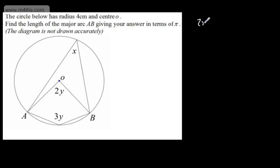We could say 2 lots of x must be equal to 2 lots of y. Angles at the center are double that at the circumference. Therefore, I'm going to say my first equation will be x is equal to y.